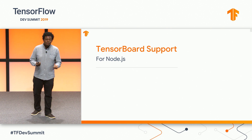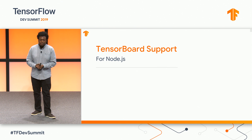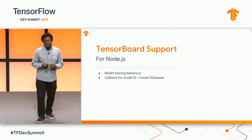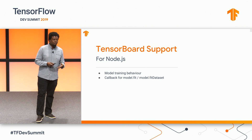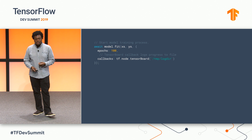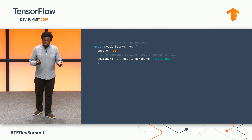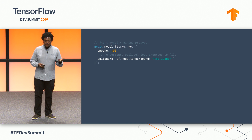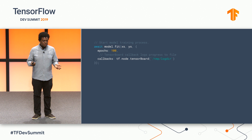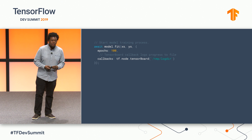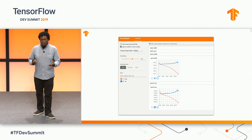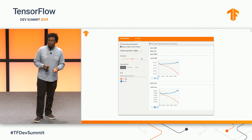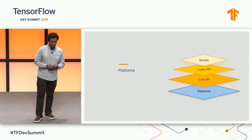Finally, we also want to announce TensorBoard support in Node.js. Now you can monitor training performance right in TensorBoard when using the TensorFlow.js Layers API in Node. A single line will generate the necessary callbacks to write the model metrics to a TensorBoard log file using the tf.node.tensorBoard command. Then you can open it in TensorBoard and look at how your training is going, just like you may be used to.